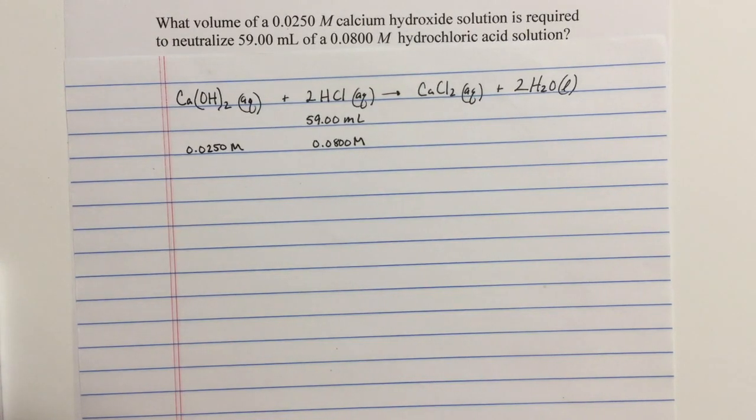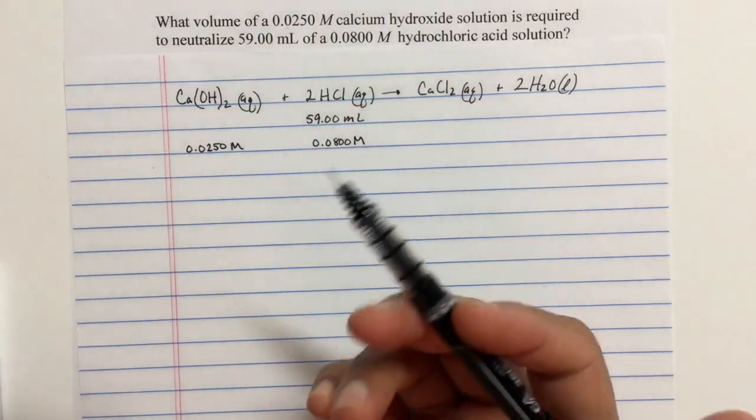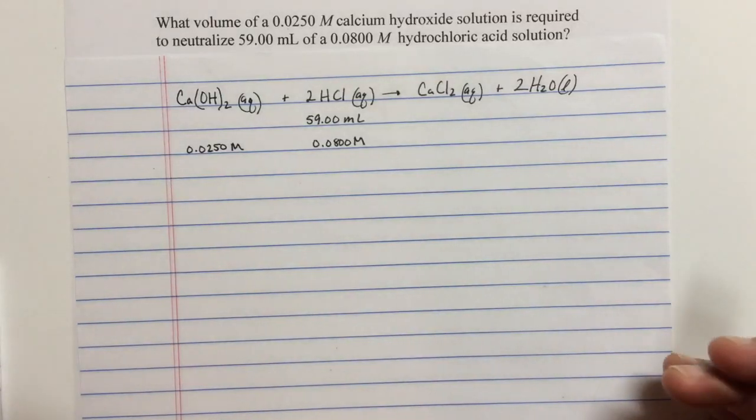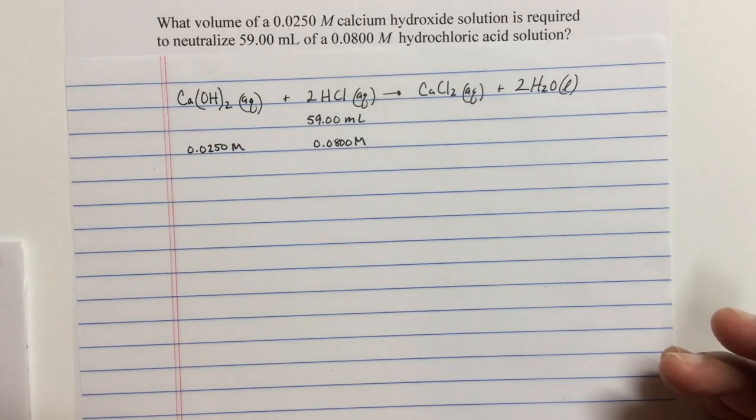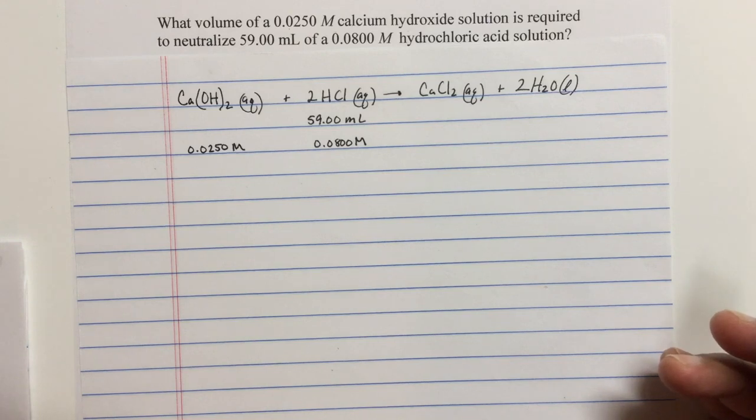In this example, we'll do some acid-base stoichiometry. Before working on a problem like this, you should go review the notes on acid-base reactions, usually called acid-base neutralizations.